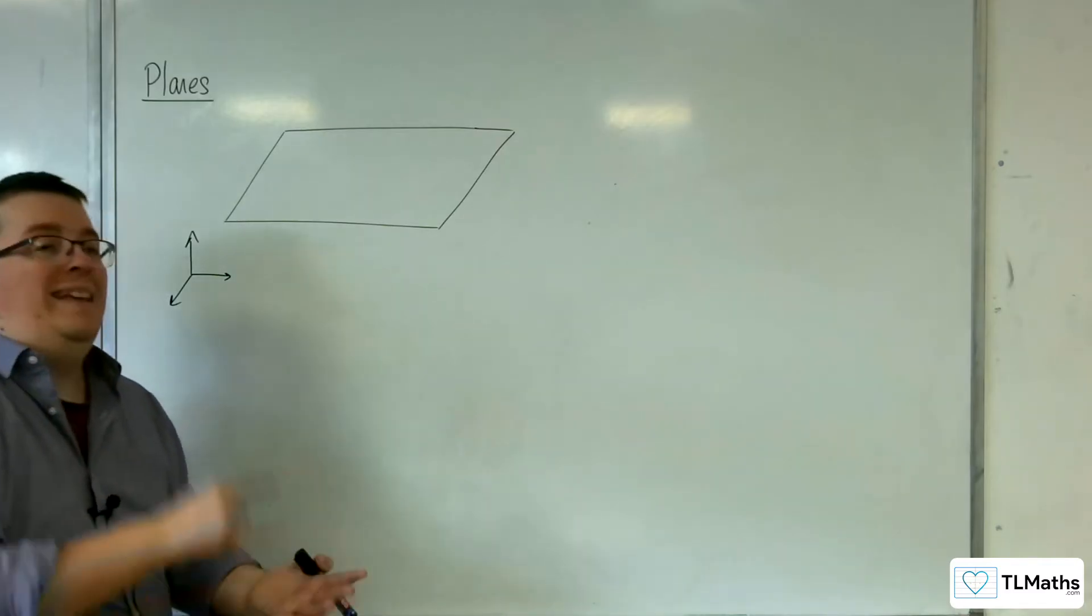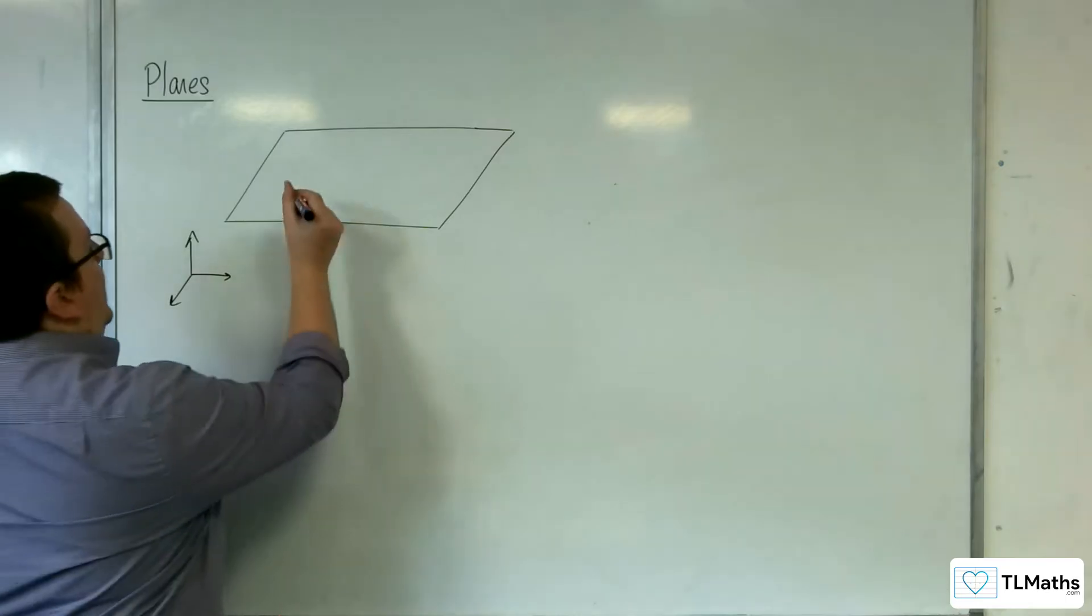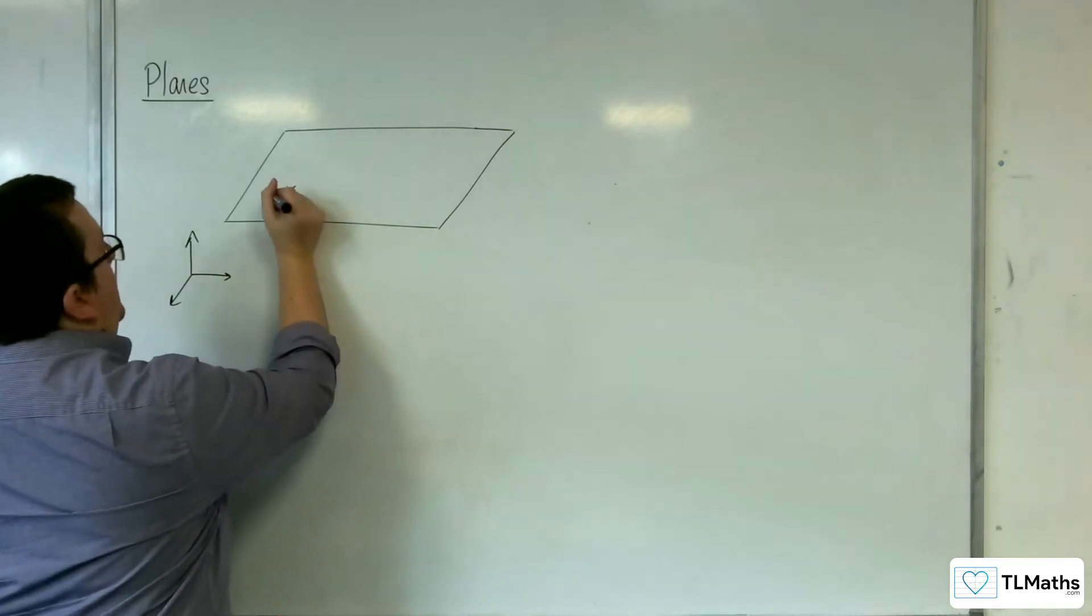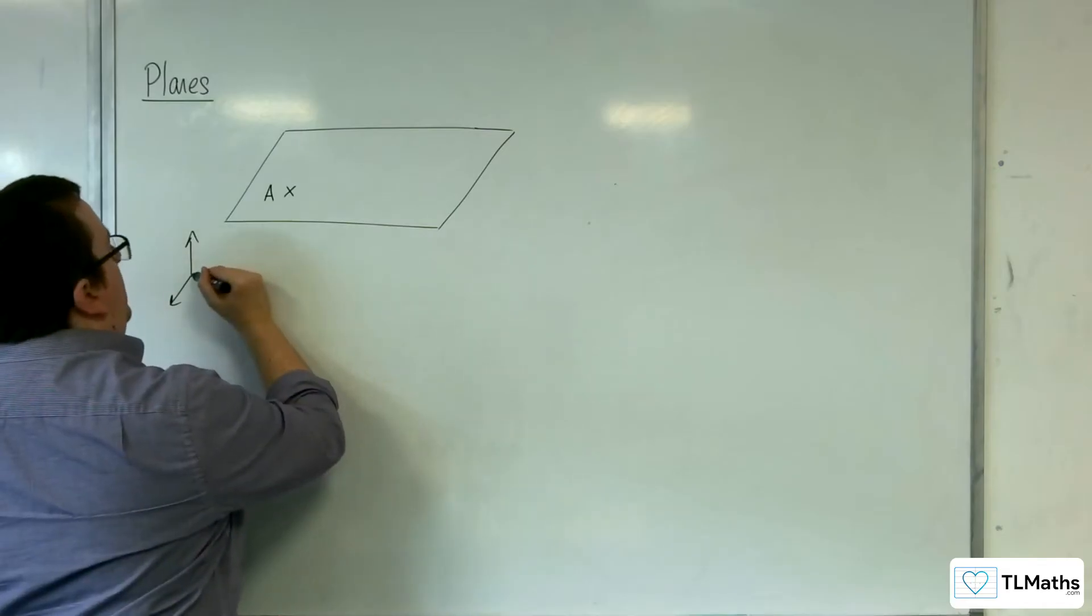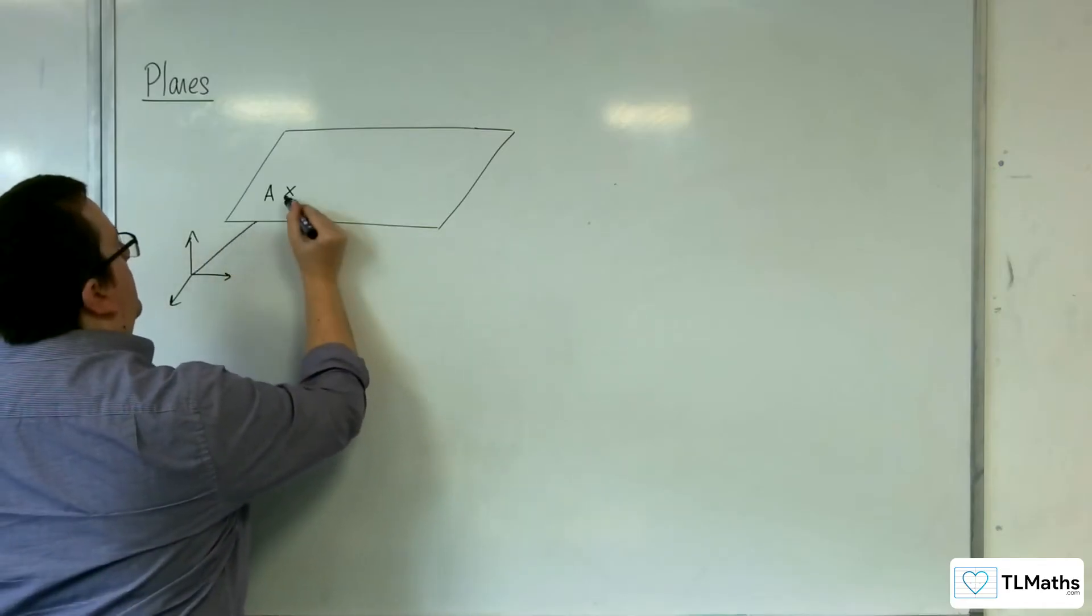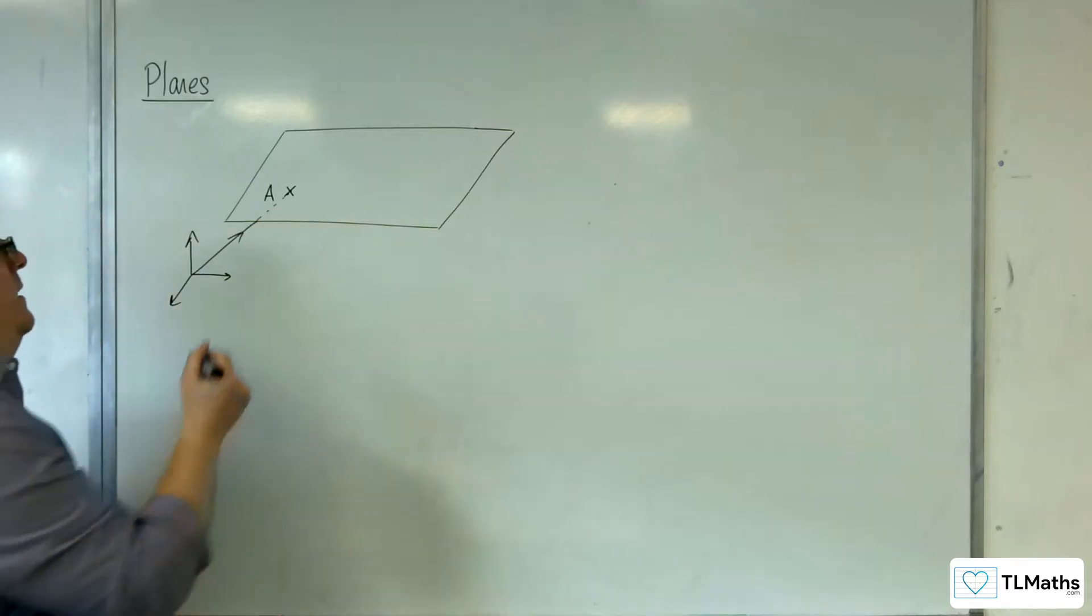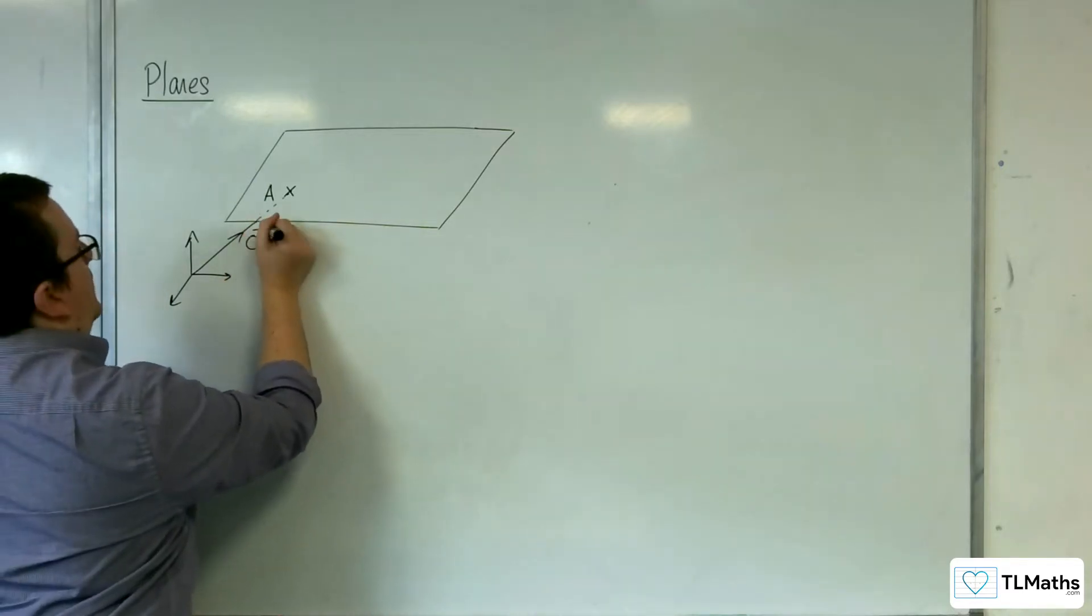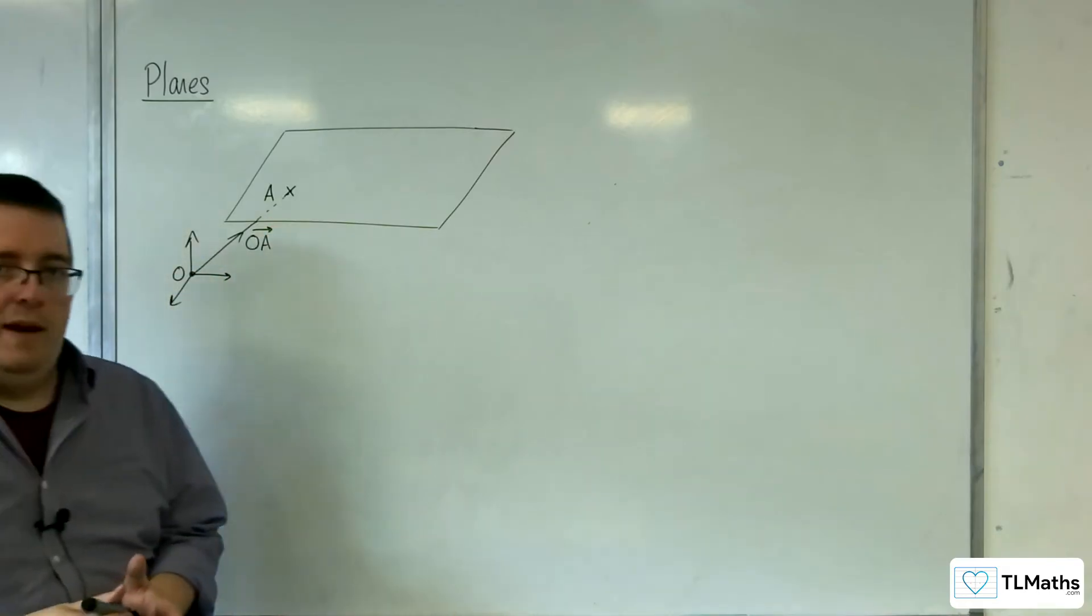So the first thing I want to do is get onto the plane. I need some way of getting onto the plane. So let's say that we've got some point A, and the consequence of that is I can use the position vector for A, so OA, there's the origin, to get onto the plane.